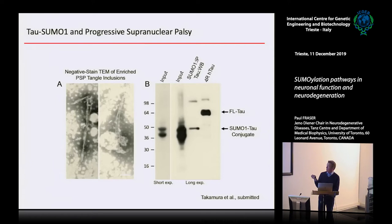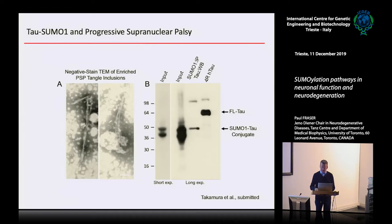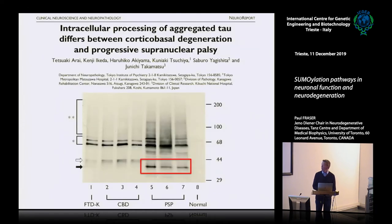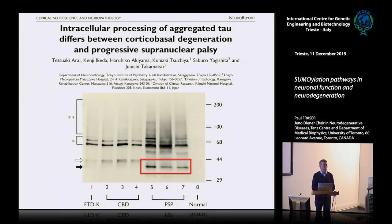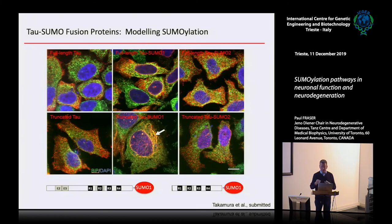The unique thing is that it's a very truncated form. Full-length tau runs at about 70 kDa, but these were running at about 50 kDa, with the major band even smaller. This isn't unknown in PSP — others have found this unique truncation that runs much smaller than full-length, and it's not seen in other tauopathies like FTD or corticobasal degeneration. It seems this truncation combined with SUMOylation is a major factor in PSP.